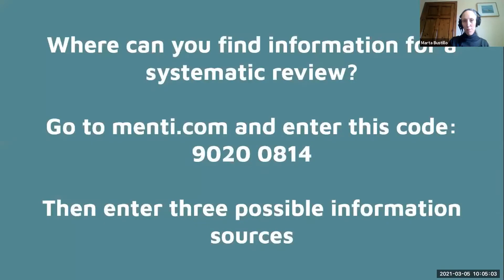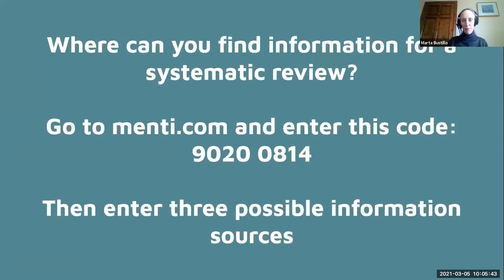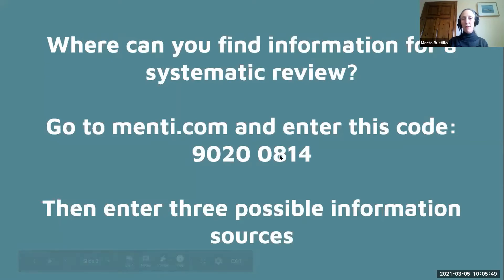Before we start, I want you to think about where you think you can find information for a systematic review. Go to menti.com on your computer and enter the code 90200814. Then enter three possible information sources that you would think about when trying to find information for your systematic review.